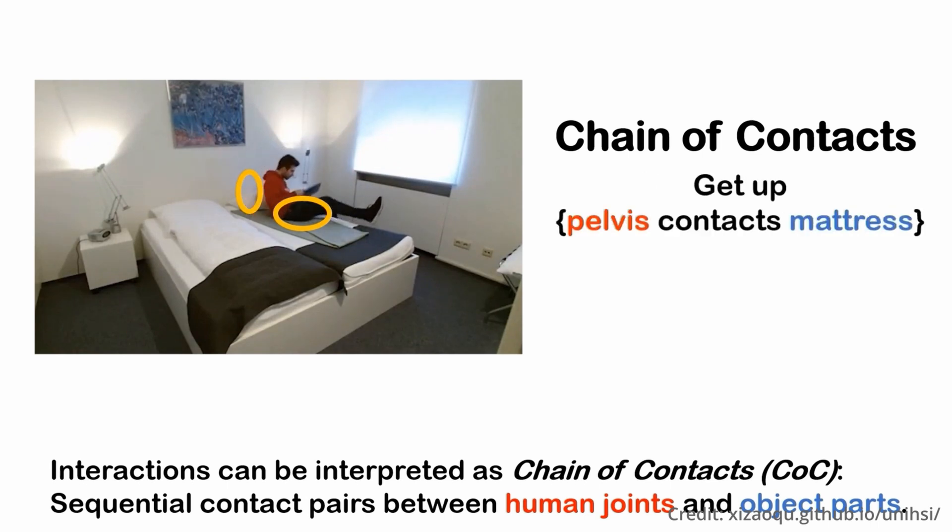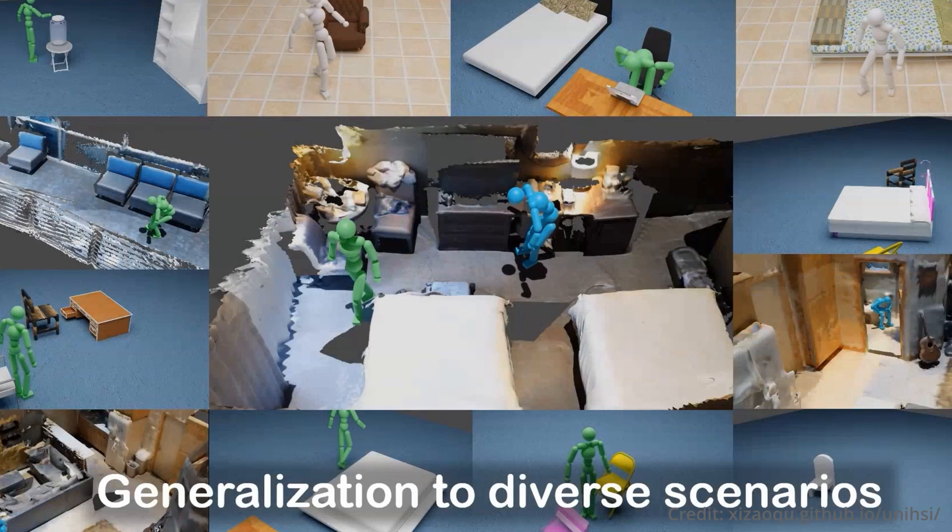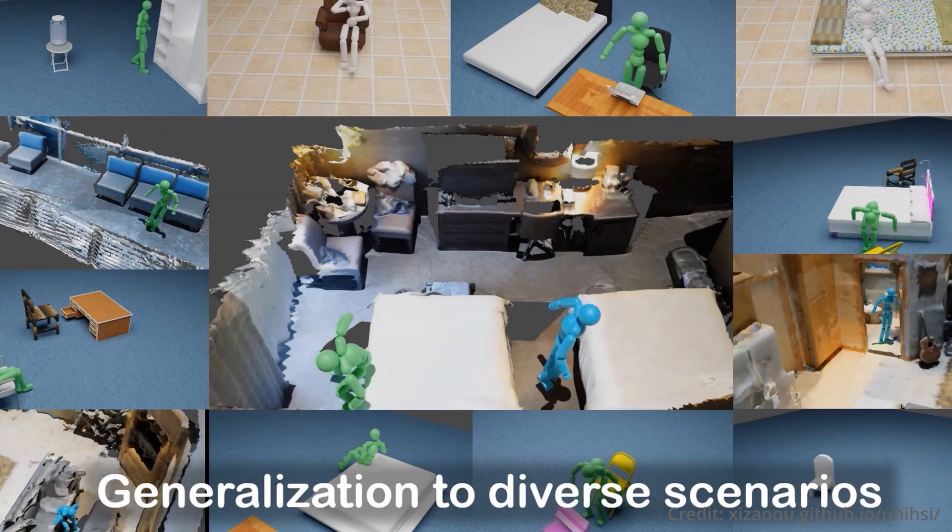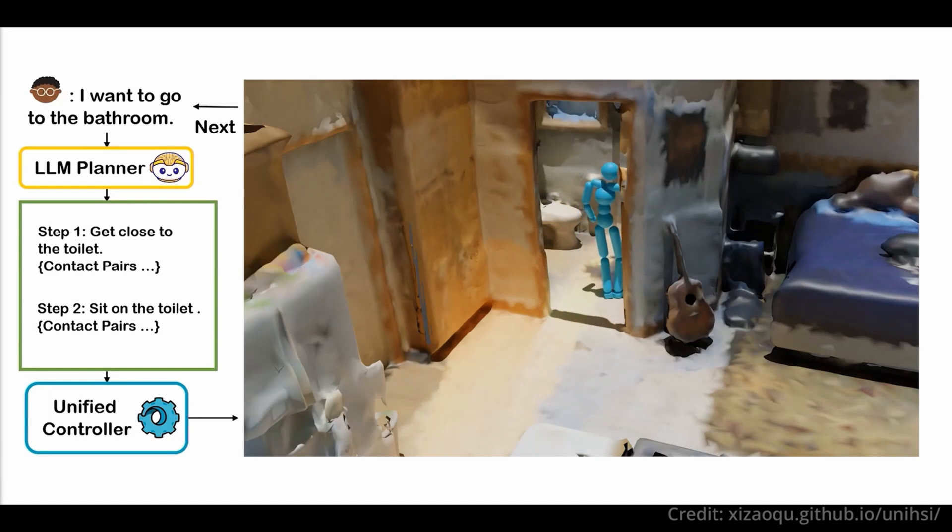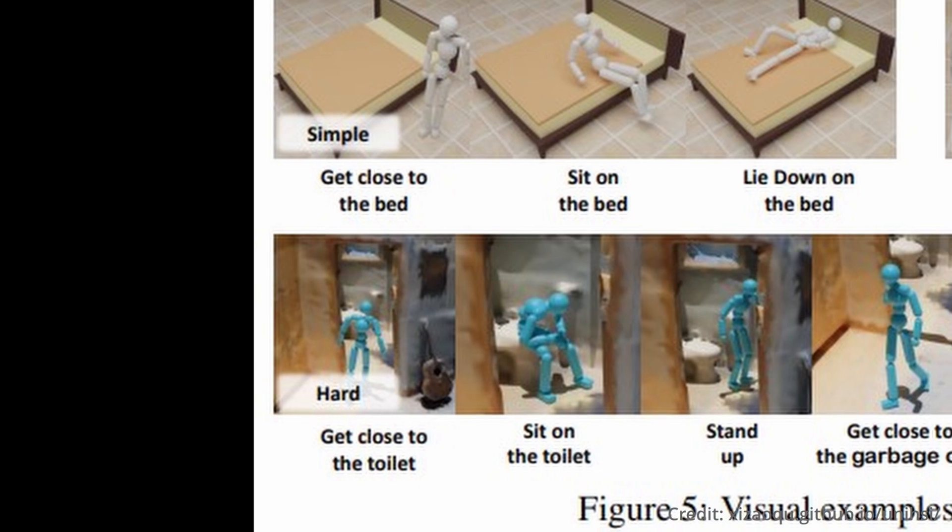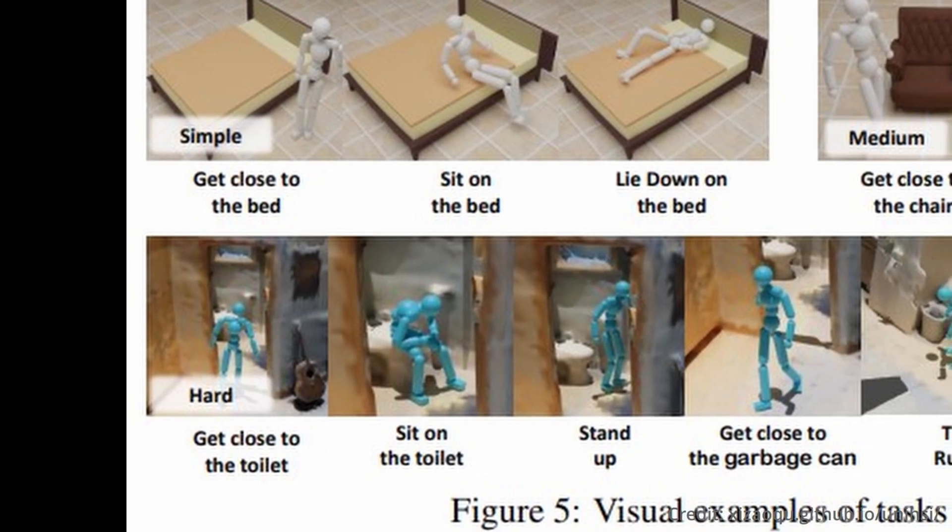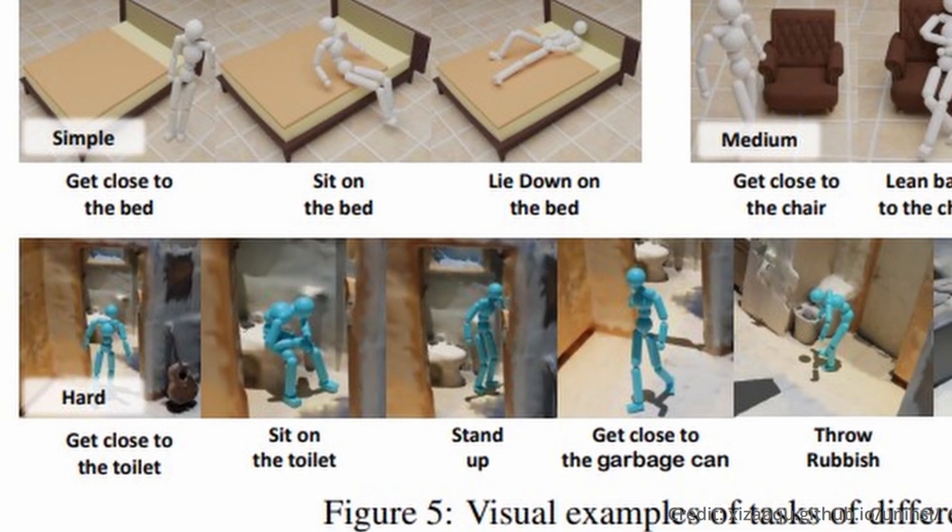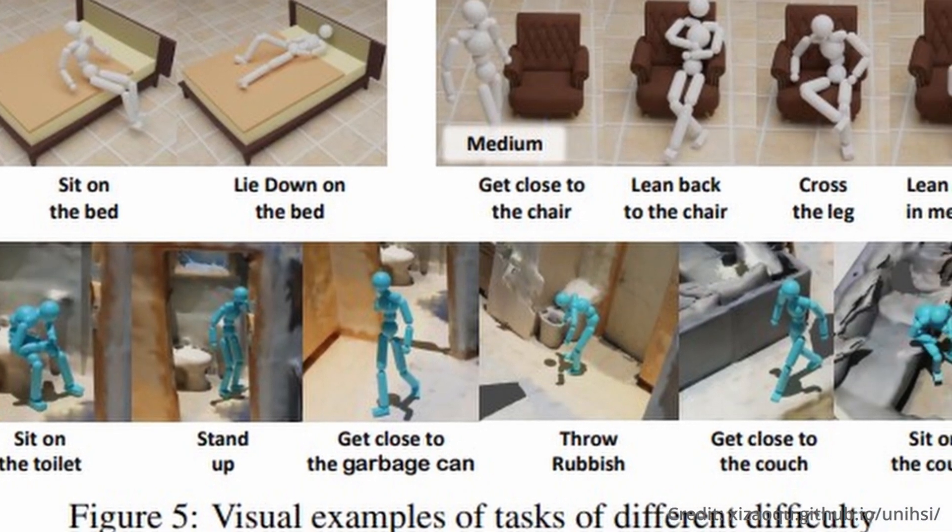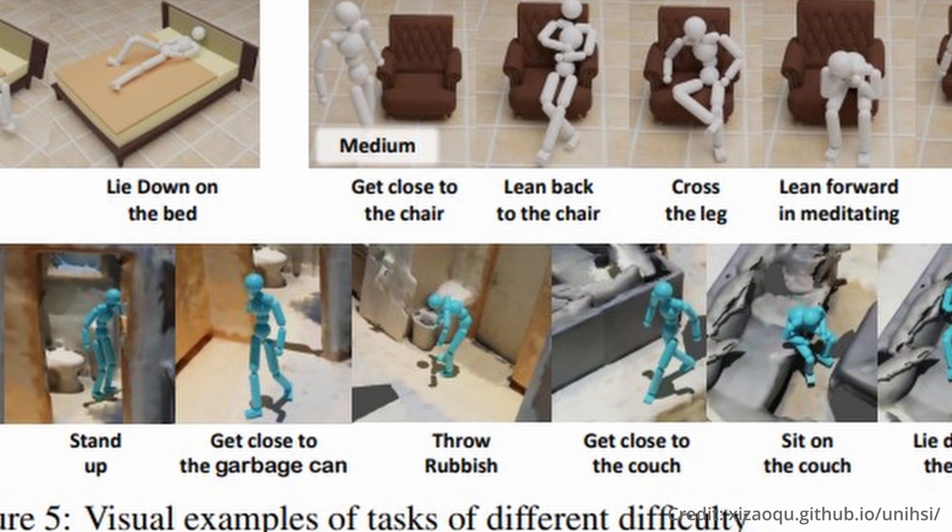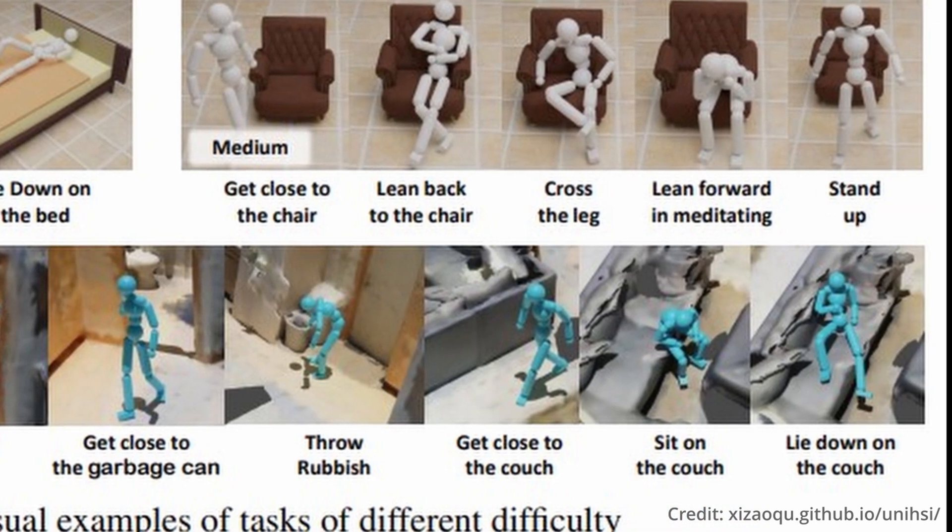To ensure the robustness and applicability of UniHSI, a new dataset named Scene Plan has been assembled, incorporating thousands of task plans produced by large language models, reflecting a range of diverse scenarios. Moreover, comprehensive experiments have already validated the versatility and efficacy of the UniHSI framework, demonstrating its adaptability and generalizability to real, scanned scenes, signifying its potential in leveling human-AI interactions.